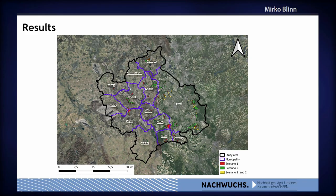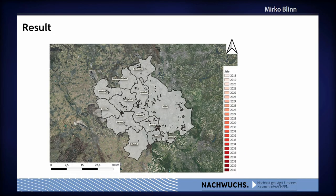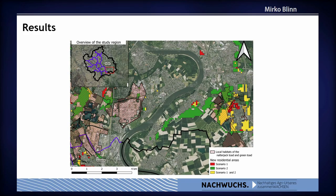We can see which grid cells change from agriculture to potential new area in which scenario. In the second map, we can see which grid cells will change from agriculture to residential area in which year. The main result for the stakeholders is that they have a chance to identify conflicts very early — with nature conservation or other planning constraints.